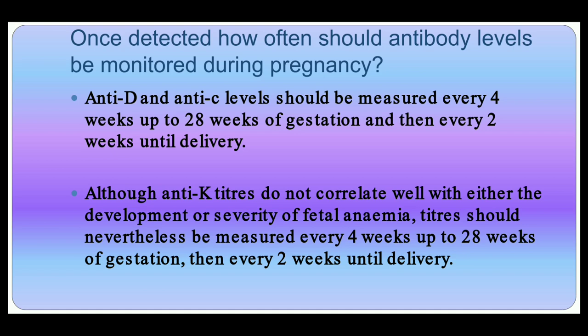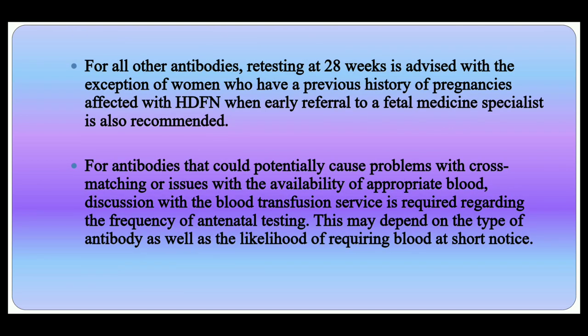Once detected, antibody levels should be monitored: anti-D and anti-c levels should be measured every four weeks up to 28 weeks of gestation, then two-weekly until delivery. Although anti-K levels do not correlate well with the development or severity of fetal anemia, anti-K should nonetheless be measured every four weeks up to 28 weeks, then two-weekly until delivery. For all other antibodies, retesting at 28 weeks is advised, with the exception of women with a previous history of pregnancy affected by hemolytic disease of the fetus and newborn, for whom early referral to a fetal medicine specialist is recommended.